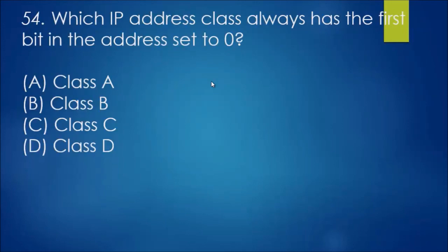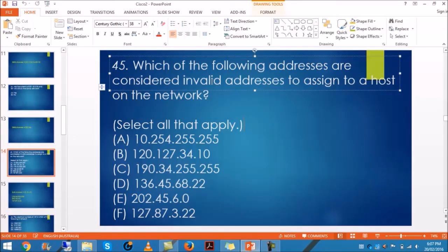For number 54, which IP address class always has the first bit in the address set to 0? In this case, it's class A, which always has the first bit in the IP address set to 0, which means these range from 1 to 127. Class A is the answer there. Hopefully the last couple made a bit of sense. Didn't make a heap of sense to me actually, but that's how it goes sometimes. You just accept laws as they are.